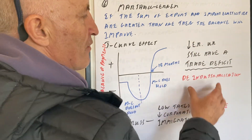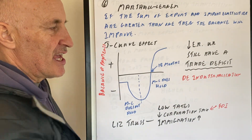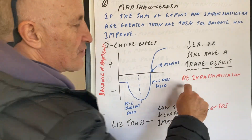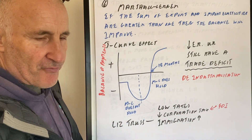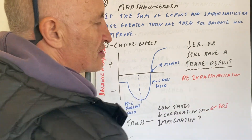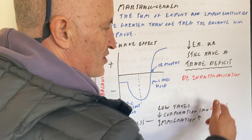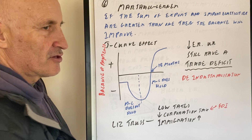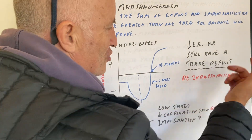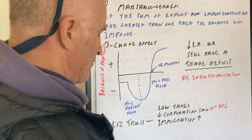However, in the UK we have had a low exchange rate for many years and still have a trade deficit. Part of that is due to de-industrialisation. In 1992, 20% of our GDP came from the manufacturing sector, but by 2022 that figure had fallen to just 10%.